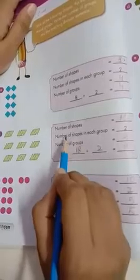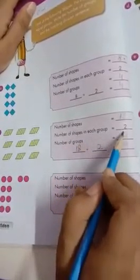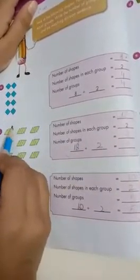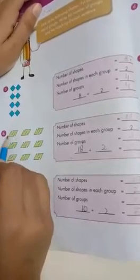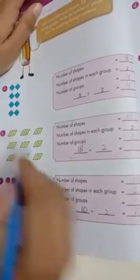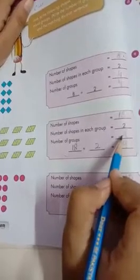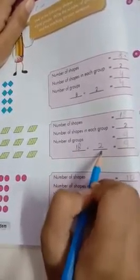And how many groups are there? It is given first. One, number of shapes in each group, two. It means how many groups are given? One, two. It means two groups are divided, right? We will divide it from two. Now, we have written here 18 divided by two.